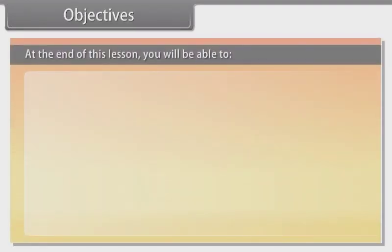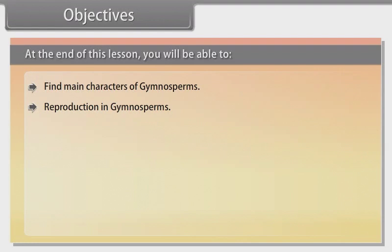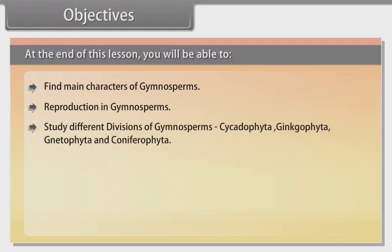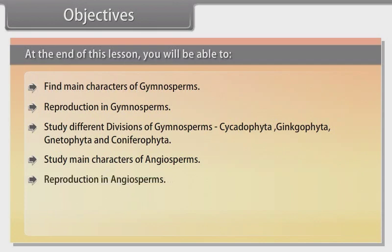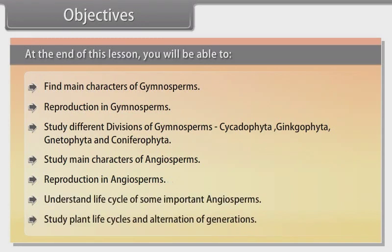Objectives: At the end of this lesson you will be able to find main characters of Gymnosperms, reproduction in Gymnosperms, study different divisions of Gymnosperms including Cycadophyta, Ginkgophyta, Gnetophyta and Coniferophyta. Study main characters of Angiosperms, reproduction in Angiosperms, understand life cycle of some important Angiosperms, study plant life cycles and alternation of generations.